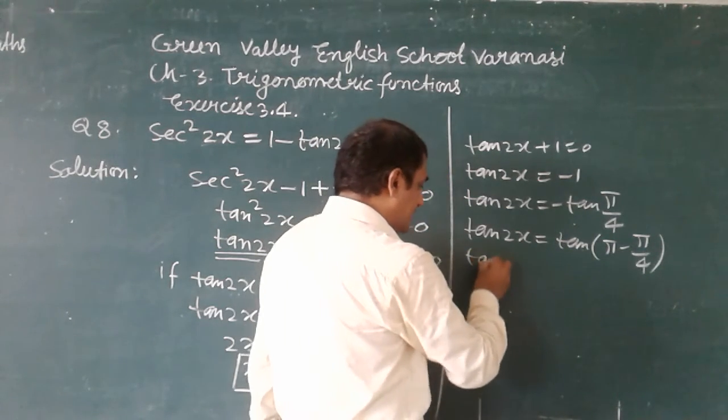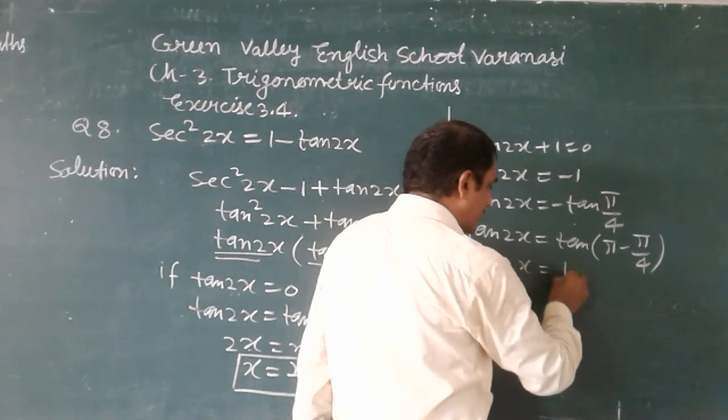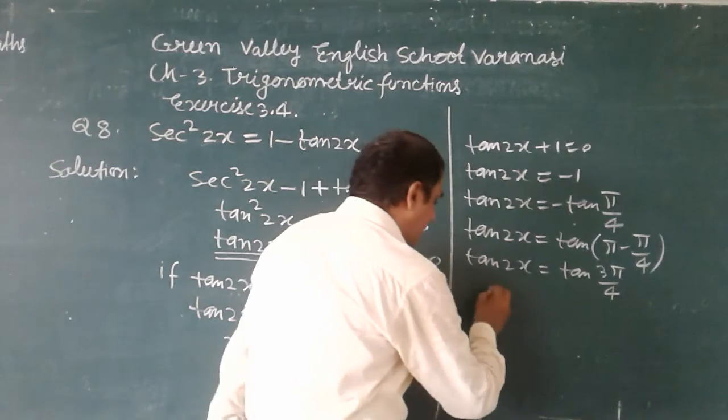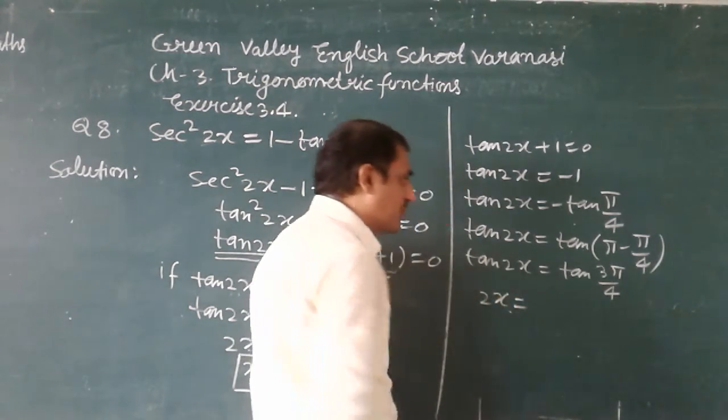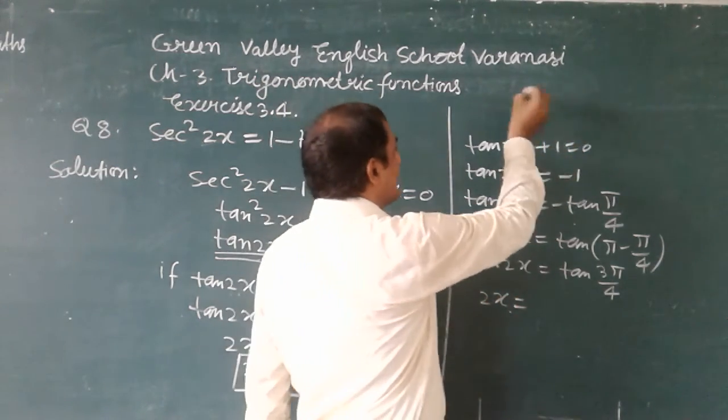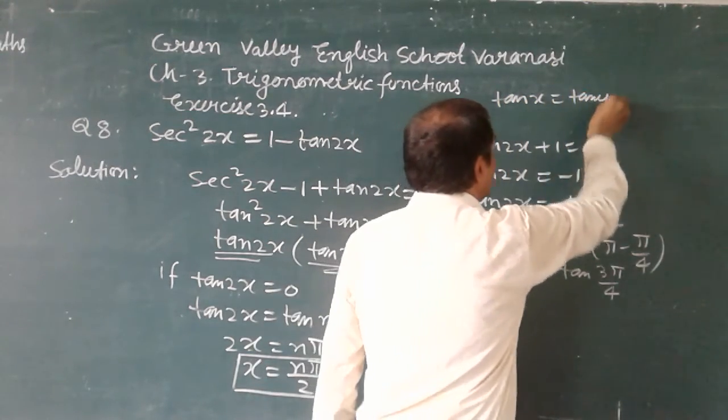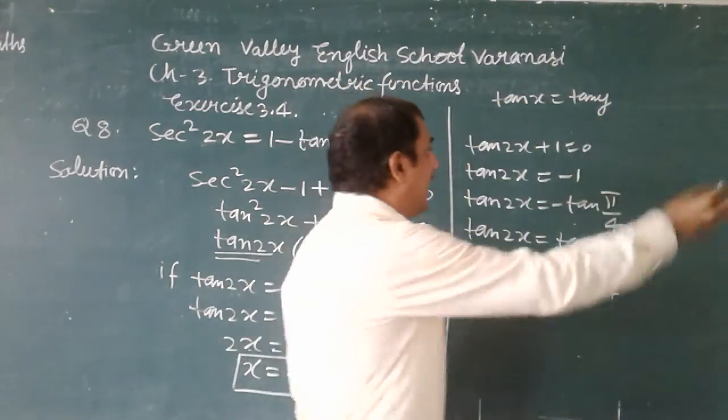Now, tan2x is equal to tan(3π/4). Now, 2x is equal to, as you know that tan x is equal to tan(nπ + α). Hence, x is equal to what?